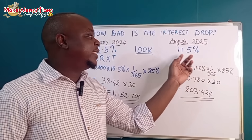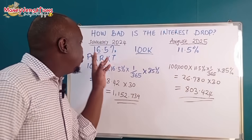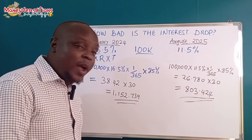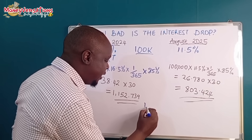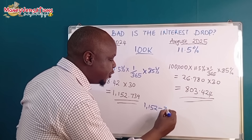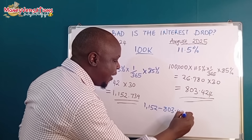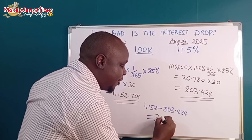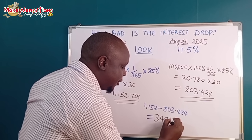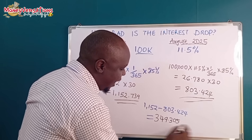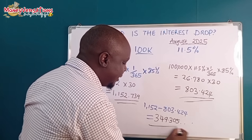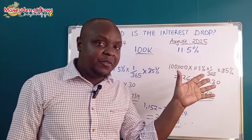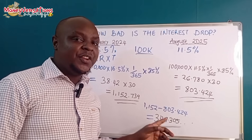Now that we have results as at January 2024 and results as at August 2025 with the difference in the drop, we can answer the question: how bad is the interest rate drop? We take 1,152 minus 803, and the answer is approximately 349 shillings. So the difference over this period, from 16.5 percent down to 11.5 percent, has been a drop of about 349 shillings and 3 cents.